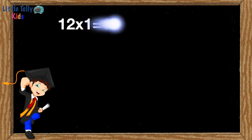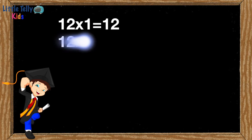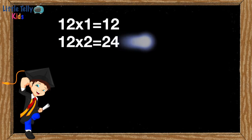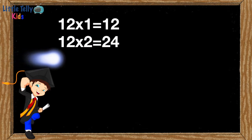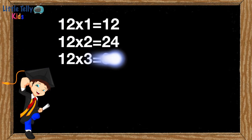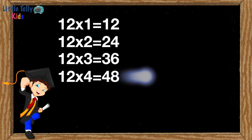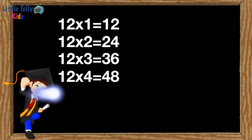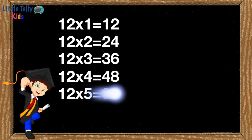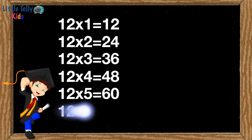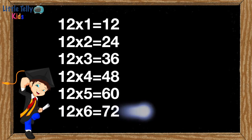12 ones are 12. 12 twos are 24. 12 threes are 36. 12 fours are 48. 12 fives are 60. 12 sixes are 72.